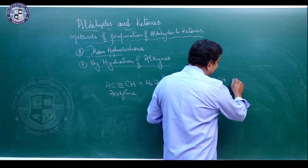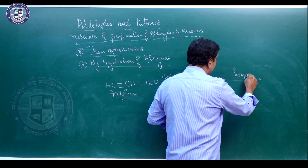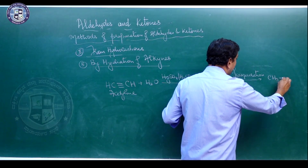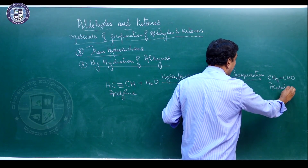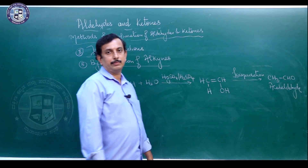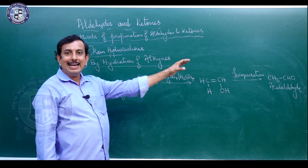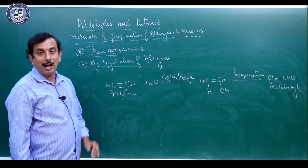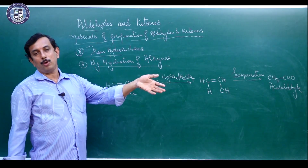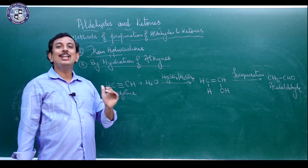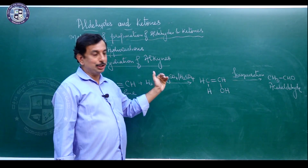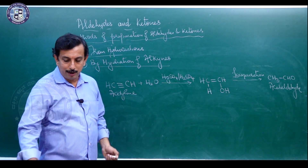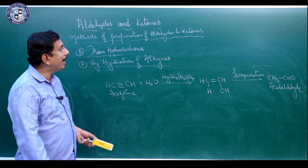The enol undergoes tautomerization (isomerization), giving the product CH₃CHO — acetaldehyde. So, acetylene subjected to acid-catalyzed hydration gives acetaldehyde. Alkynes other than acetylene — such as propyne — give ketones. Higher alkynes also give ketone products. This is how preparation of aldehydes and ketones from alcohols and hydrocarbons is done collectively.